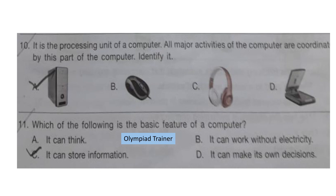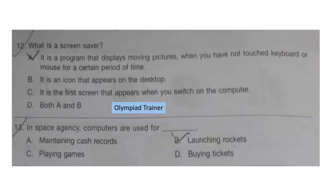Question 11: Which of the following is the basic feature of a computer? A: It can think. B: It can work without electricity. C: It can store information. D: It can make its own decisions. The correct answer is option C — it can store information.